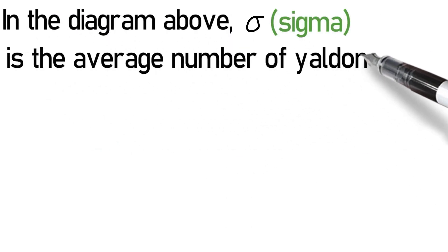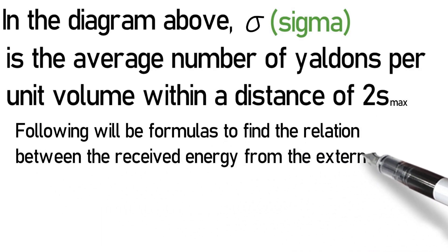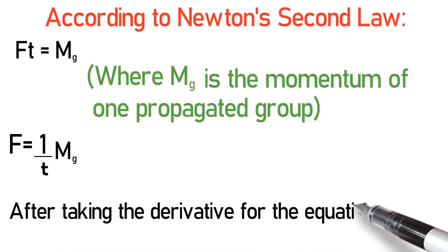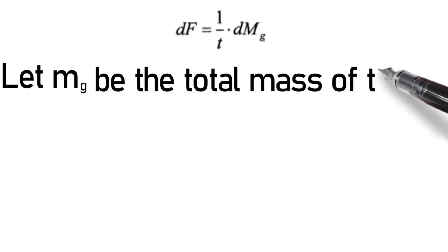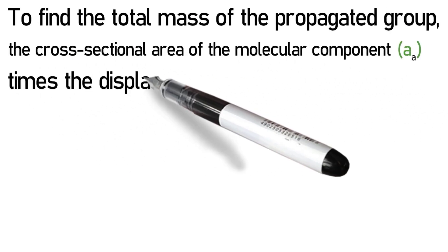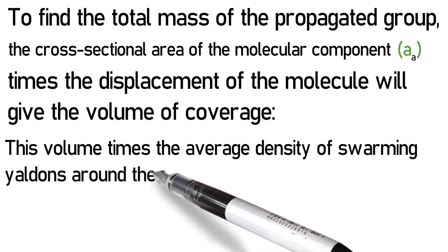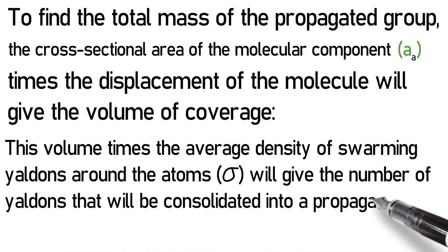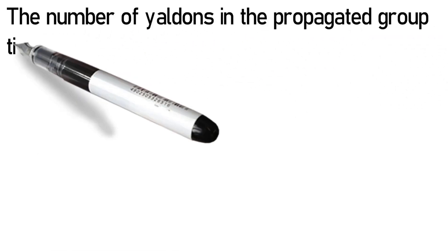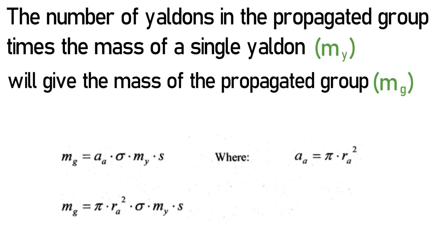In the diagram above, sigma is the average number of Yaldins per unit volume within a distance of 2s max. Following will be formulas to find the relation between the received energy from the external source and the energy of the propagated groups of Yaldins. According to Newton's second law, after taking the derivative, let mg be the total mass of the Yaldins in one propagated group and vp be the velocity of that propagated group. To find the total mass of the propagated group, the cross-sectional area of the molecular component times the displacement of the molecule will give the volume of coverage.